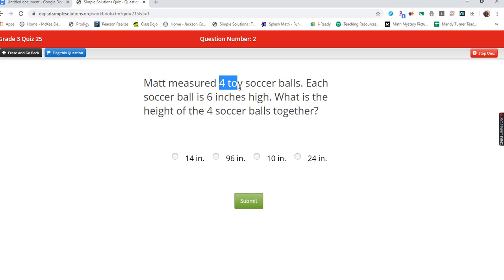Matt measured four toy soccer balls. Each soccer ball is six inches high. 'Each' is our multiplication keyword. Four toy soccer balls, each six. What is the height of the four soccer balls together? Four times six is 24.